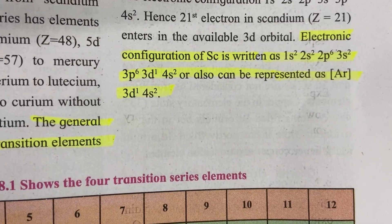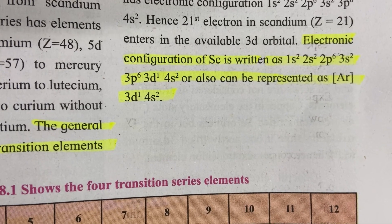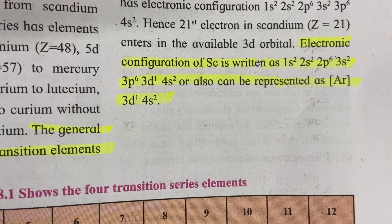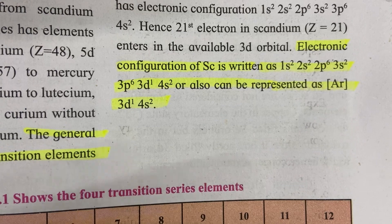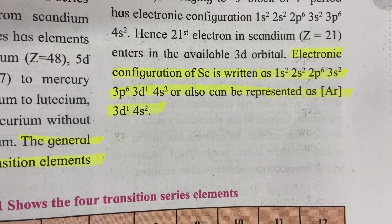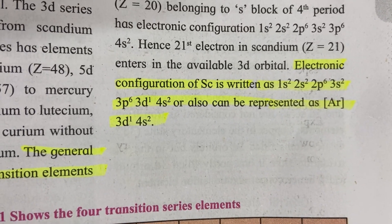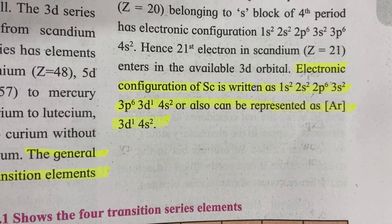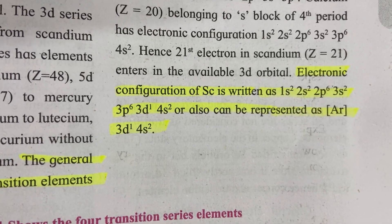The electronic configuration of scandium is written as 1s², 2s², 2p⁶, 3s², 3p⁶, 3d¹, 4s², or it can also be represented as [Ar] 3d¹ 4s².